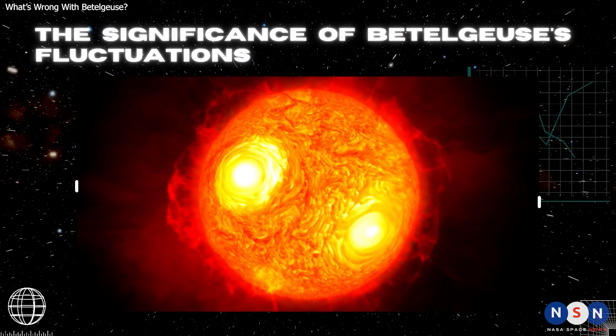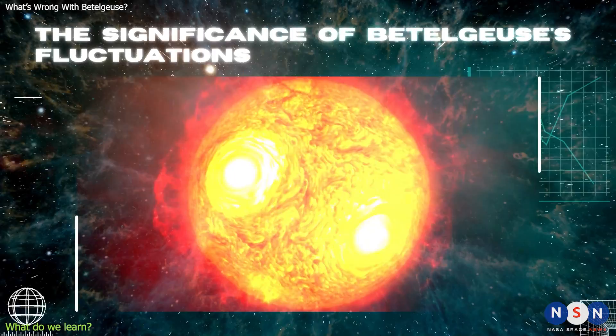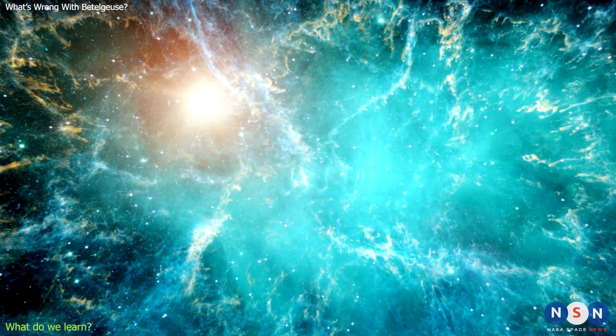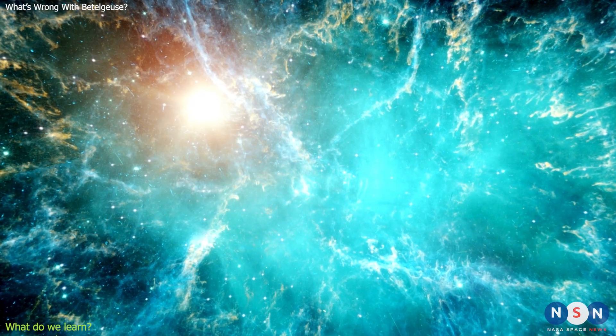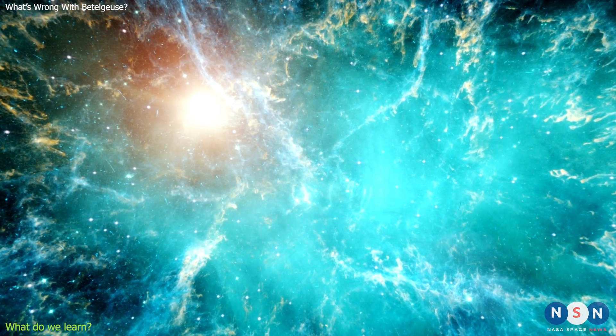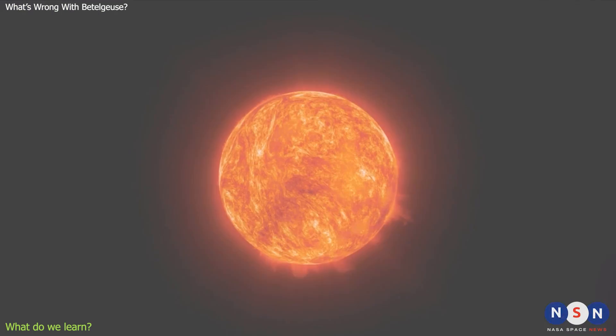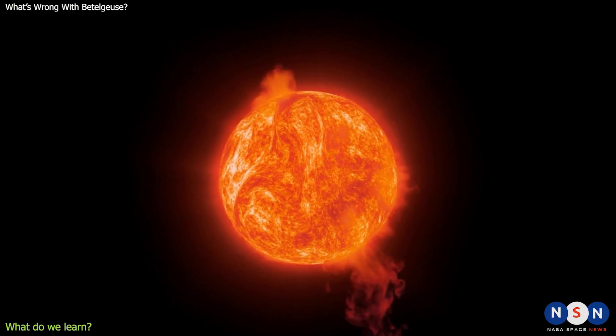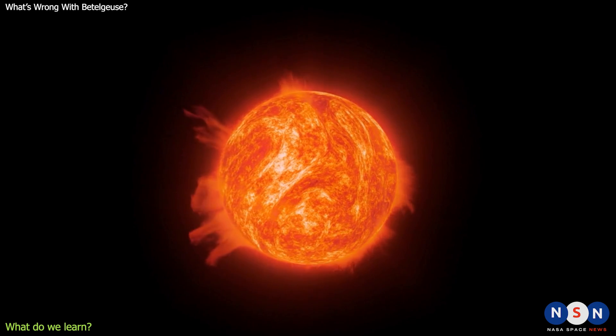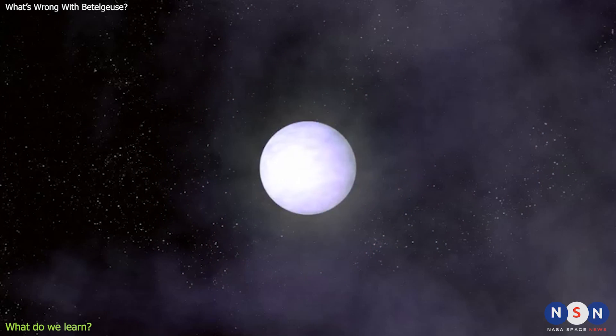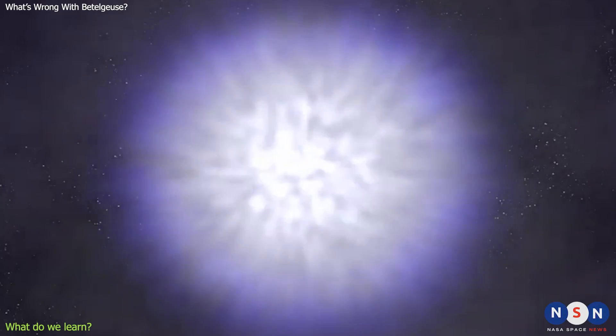So what does Betelgeuse's weird behavior mean for us? Well, even if it doesn't go supernova soon, it still offers us a unique opportunity to learn more about stars and their evolution. Betelgeuse is also a valuable source of information about the history and future of our galaxy. By studying its chemical composition and motion, we can trace its origin and evolution. By predicting its fate and impact, we can imagine what our galaxy will look like when it explodes.